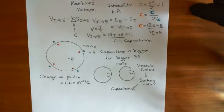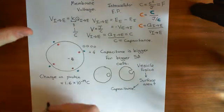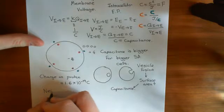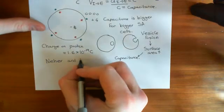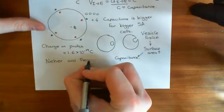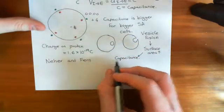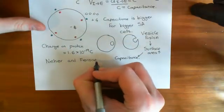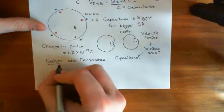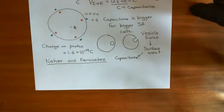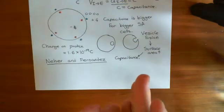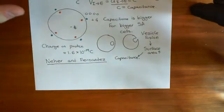Now let's talk about an experiment done by two main people, Neher and Fernandez. They were the first to realize that this change in capacitance caused by vesicle fusion could actually be used to assess whether vesicles have actually fused with the plasma membrane.